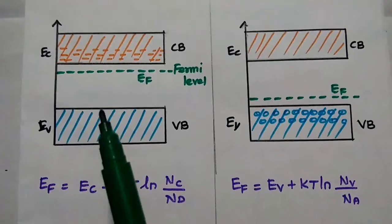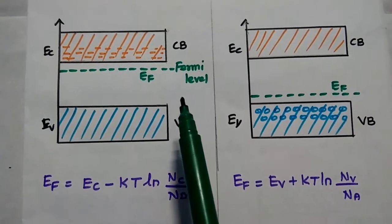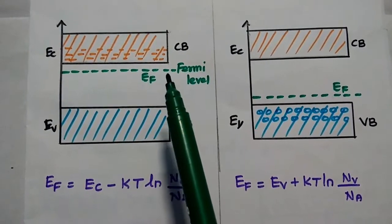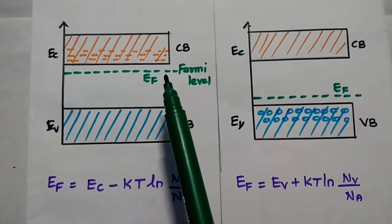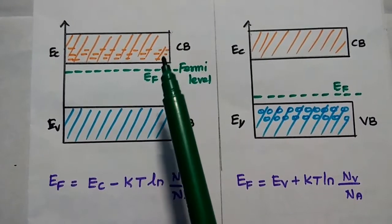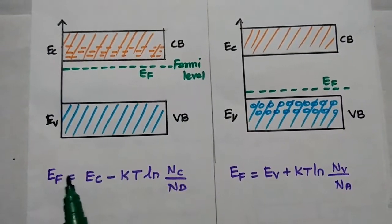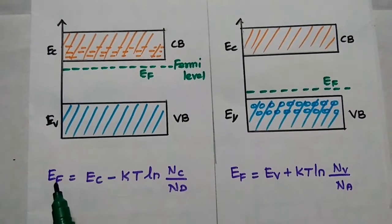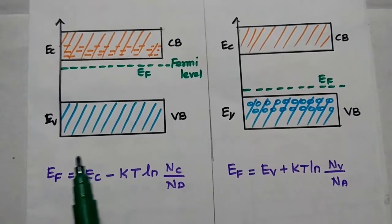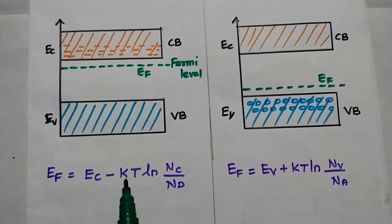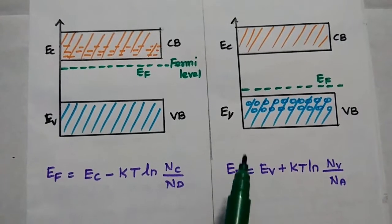Finally, the Fermi level of N-type semiconductor material: the Fermi level is shifting towards the bottom of the conduction band due to the large number of electrons in the conduction band. Its value is given as: EF = EC − KT ln(Nc/Nd).